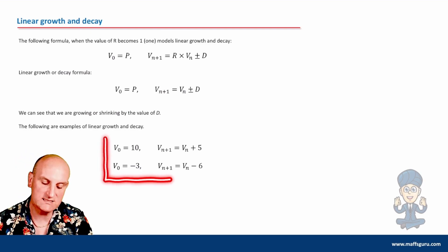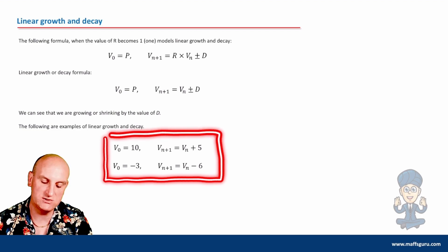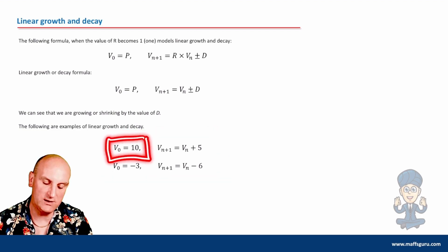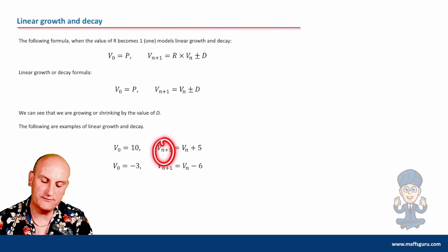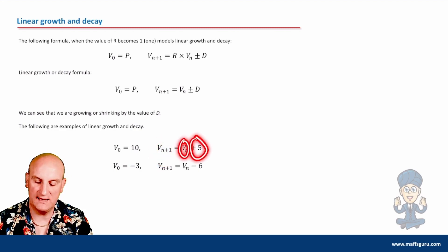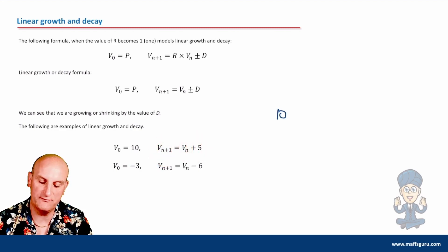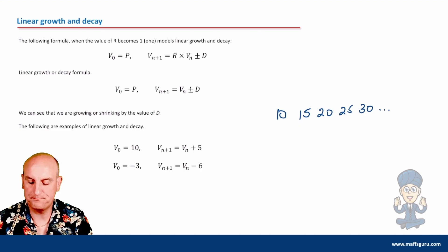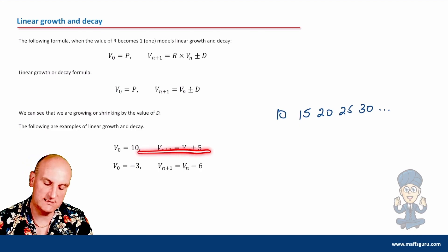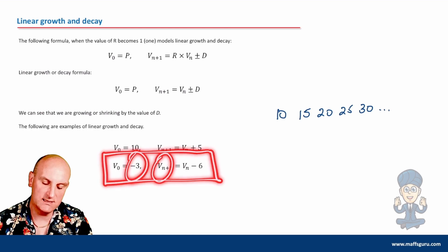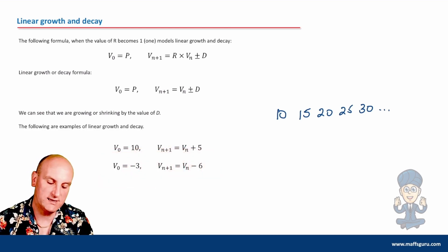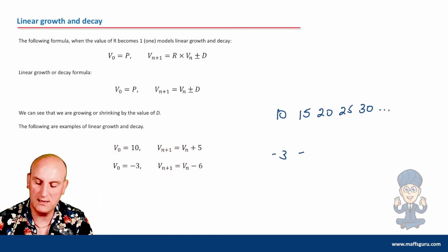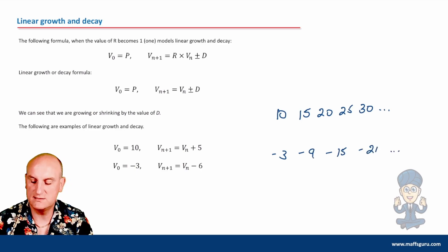From the previous lesson we had some examples of recurrence relationships. One had a start value of 10: to get to the next value, take the current value and add 5. So the sequence is 10, 15, 20, 25, 30, and so on. Another started at negative 3: take the current term and subtract 6, giving minus 3, minus 9, minus 15, minus 21, and so on.